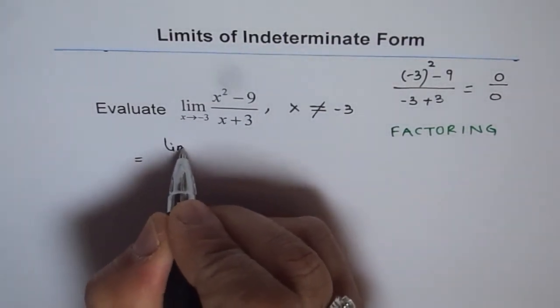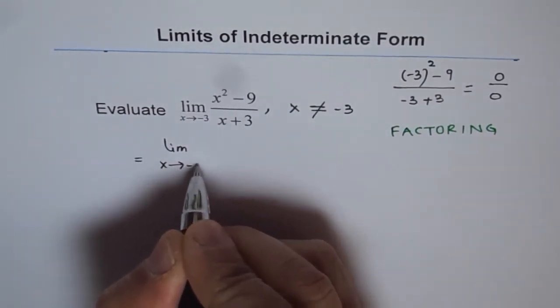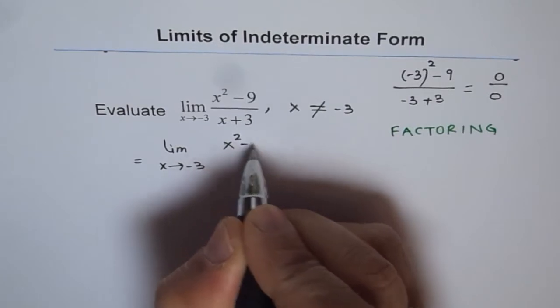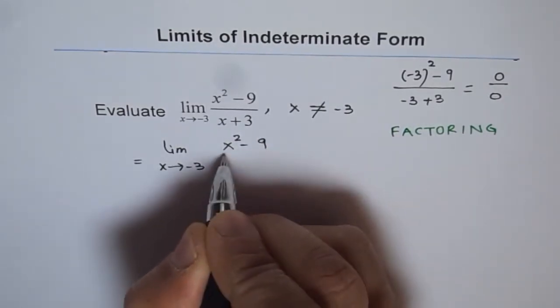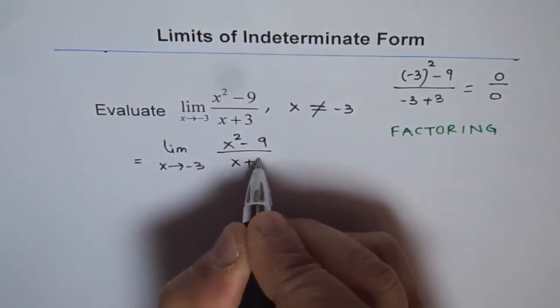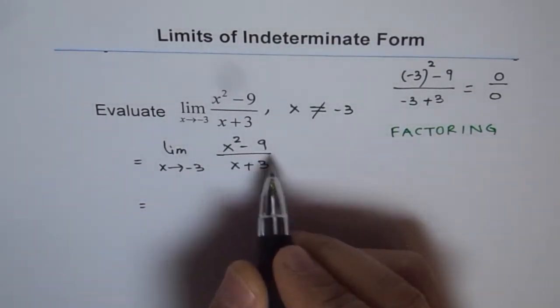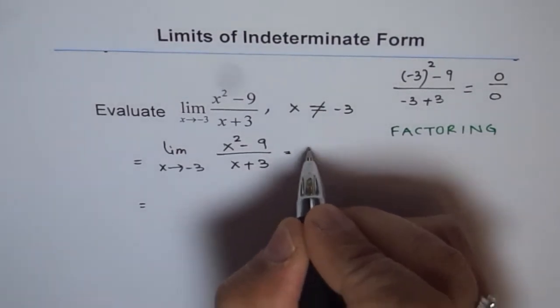So we have this question as limit x is approaching minus 3, and the rational function we have is x squared minus 9 over x plus 3. Now the numerator is basically a difference of squares. It could be written as limit x approaches minus 3, it is x squared minus 3 squared.